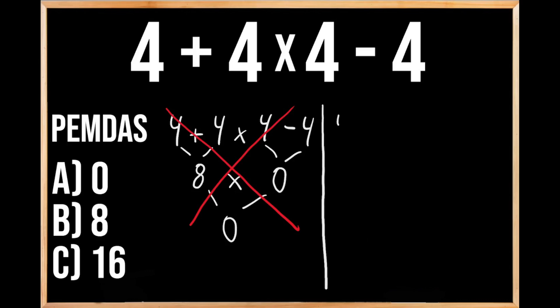Our original problem was 4 plus 4 times 4 minus 4. So since we have multiple operations within this problem, we need to make sure that we're following the order of operations here. And over on the left-hand side, we can see the acronym PEMDAS,